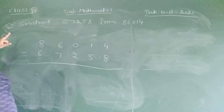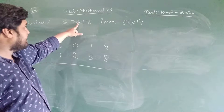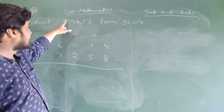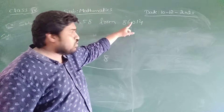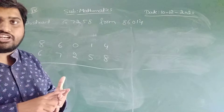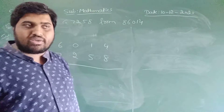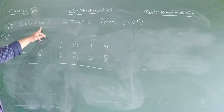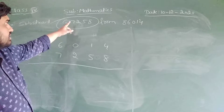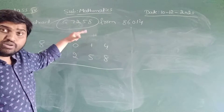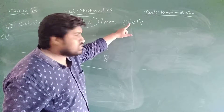I am going to take one example. Subtract — read the number — you need 10, 100, 1000, 10,000. Subtract 67,258 from 86,040. We are going to subtract 67,258 from the number 86,040.